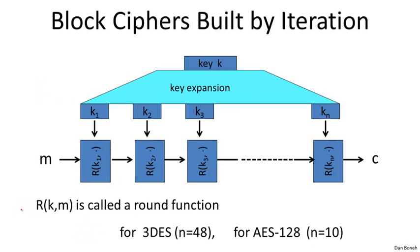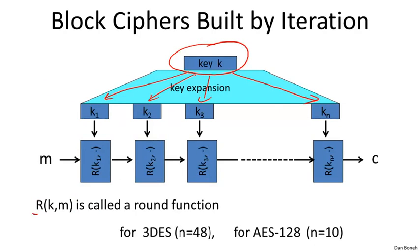Block ciphers are often built by iteration. In particular, we're going to look at block ciphers where a key K is first expanded into a bunch of round keys, and then a round function is applied to the input message again and again. Essentially after all these round functions are applied, we obtain the resulting ciphertext.